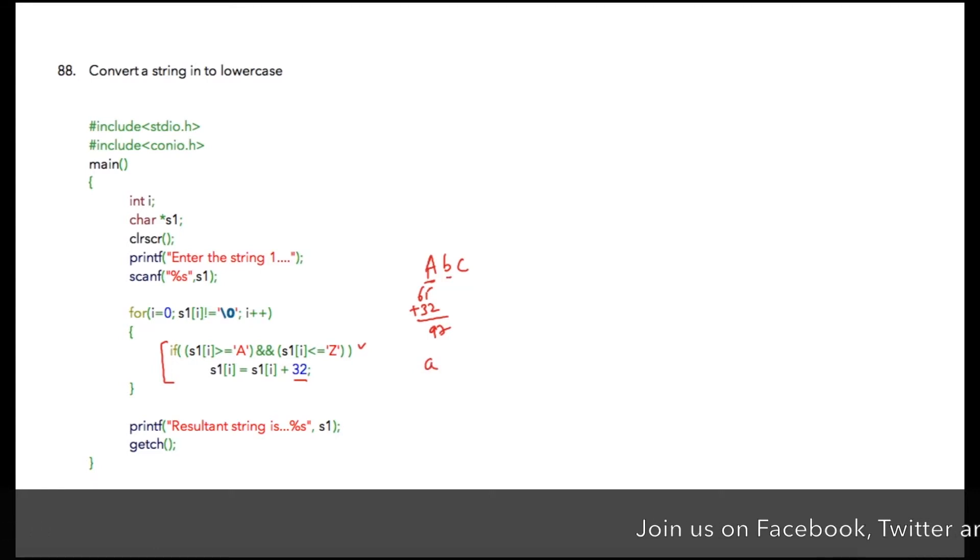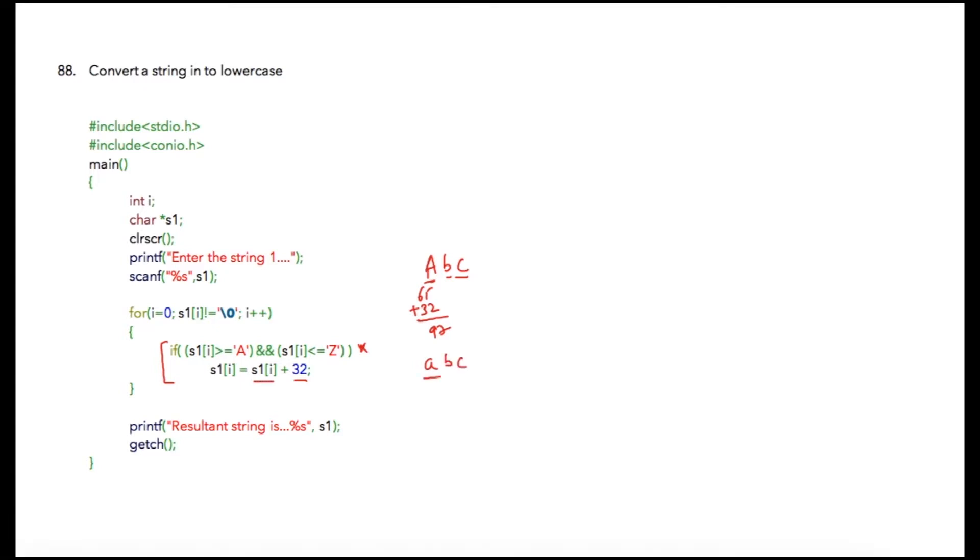For the next occurrences of B and C, this condition will not be true. Hence the remaining letters will remain as it is. So our final string will be abc in small. Once this for loop is completely executed, we'll directly print resultant string is s1. So s1 is now small abc, so that abc will be printed over here.